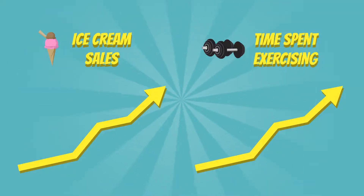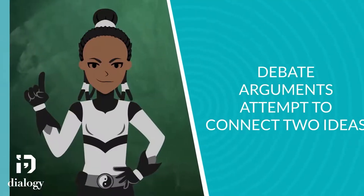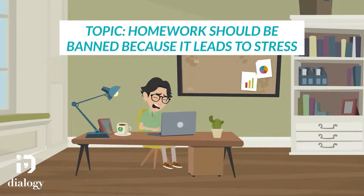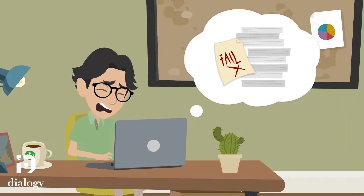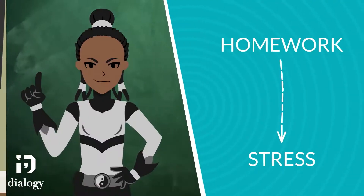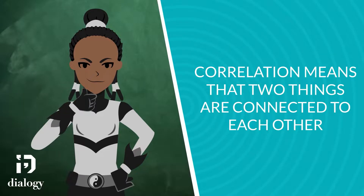This example illustrates the exciting concept of correlation versus causation. Debate arguments almost always involve some connection between two things. If we argue that homework should be banned because it leads to too much stress, we are making a connection between homework and stress — we are saying that homework is correlated with more stress. Correlated means that two things are connected to each other.